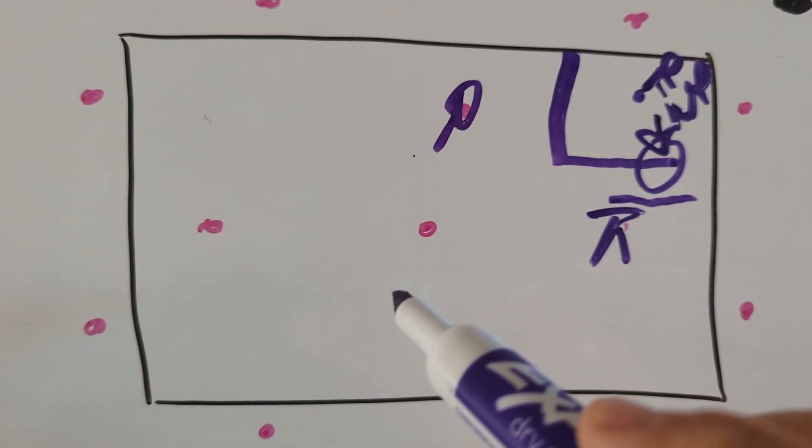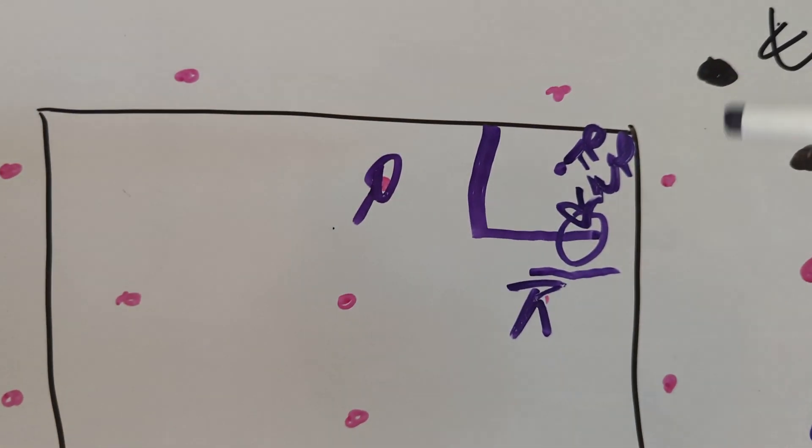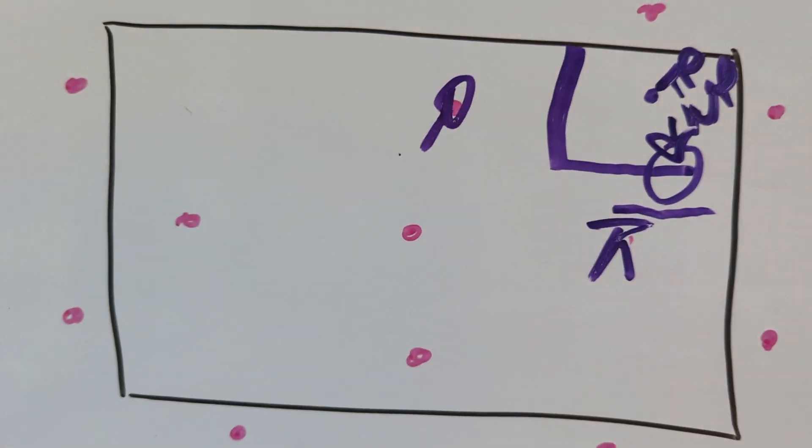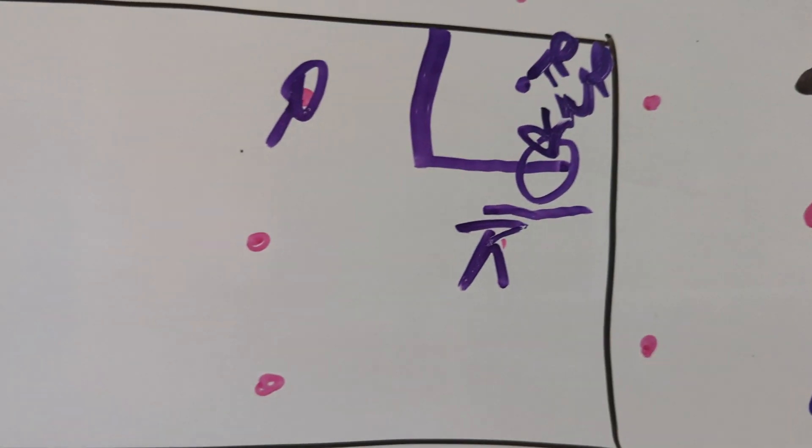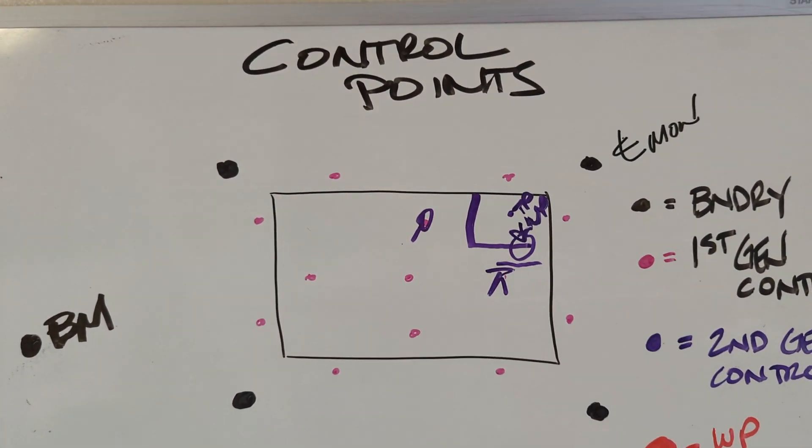And second generation is done primarily just with the instrument, but any kind of working point or temporary point, they're just sprayed out. So I hope that kind of helps on how some people set control points.